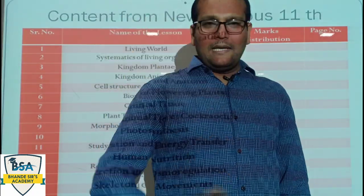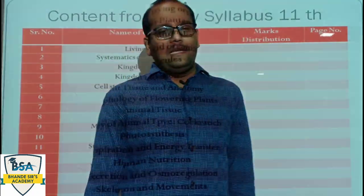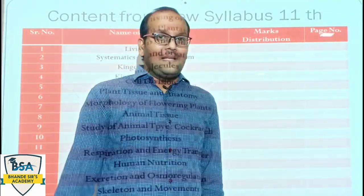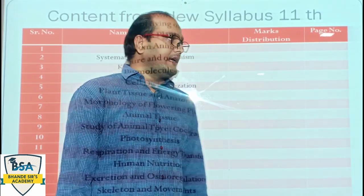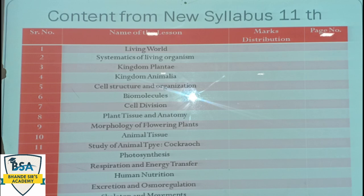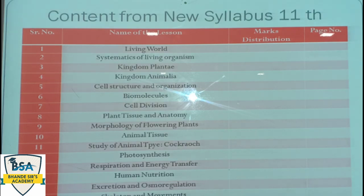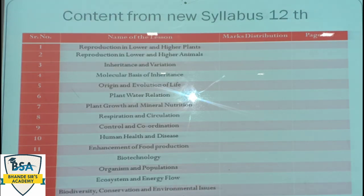I will show you the first slide for two minutes so that you can take a screenshot, and the rest I have compiled in a good way which you will see in further slides. These are the syllabus topics of Class 11: the first unit is Living World, Systematics of Living Organisms, Kingdom Plantae, Kingdom Animalia, Cell Structure and Organization, Biomolecules, Cell Division, Plant Tissue Anatomy, Morphology of Flowering Plants, Animal Tissue, and the study of animal types. For example, we will study Cockroach, then Photosynthesis, Respiration and Energy Transfer, Human Nutrition, Excretion and Osmoregulation, Skeleton and Movement.